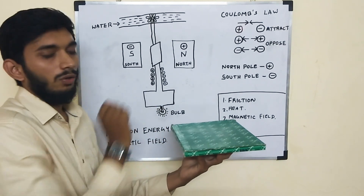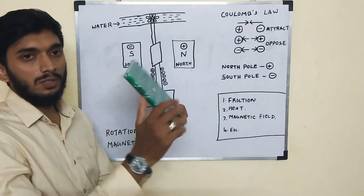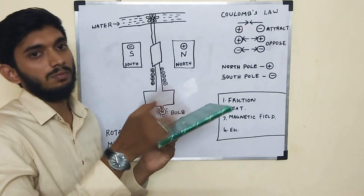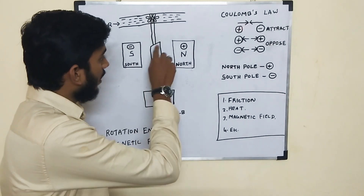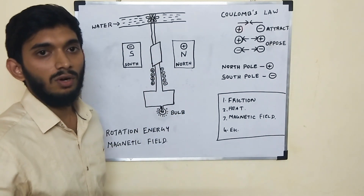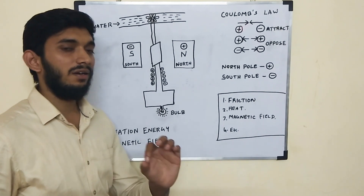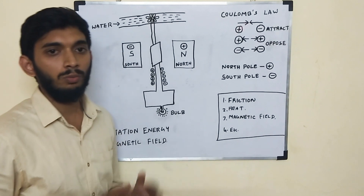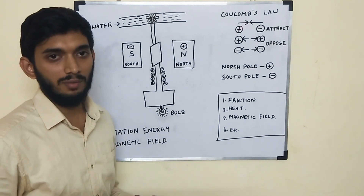The bulb will glow, getting a lot of energy, and the energy will be moving. That's why the electrons will be turned — the electrons will be able to move in the power of electricity.